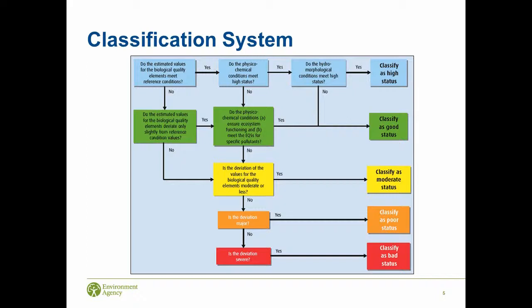We have different classes of status from high through to bad. High status means rivers are as near to natural or undisturbed as they can be. They deviate progressively the further we get down towards bad status, where they would severely deviate from reference conditions. We're aiming to get towards good and high status wherever we can.